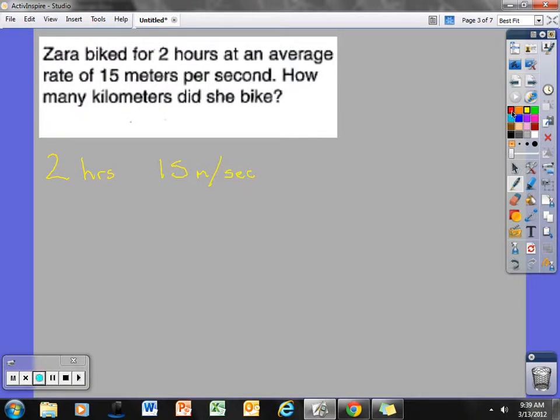We want to know how many kilometers she biked. The first thing I know is that 1 kilometer is equal to 1,000 meters, or I could reverse that and say 1 meter is equal to 1,000th of a kilometer. That's important to know, this conversion right here.